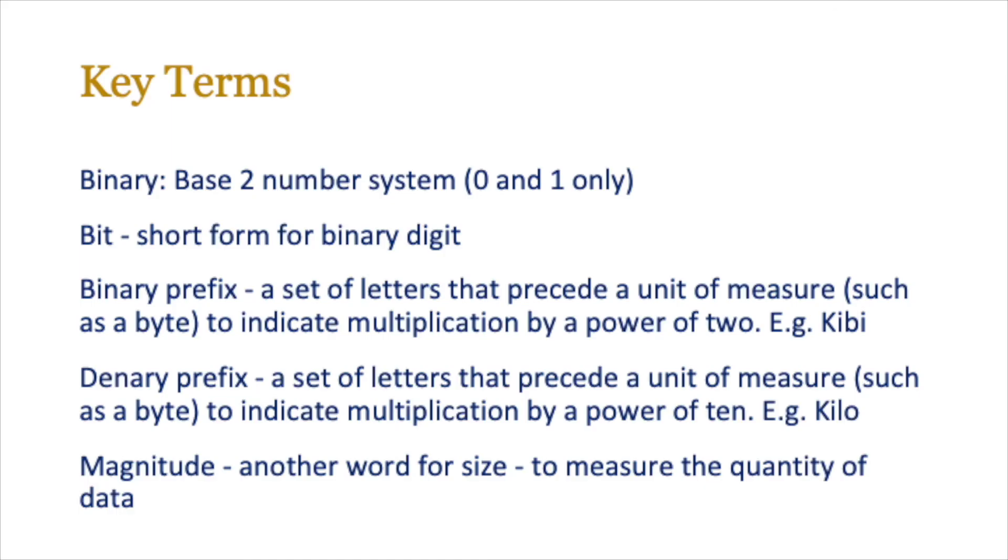Some of the key terms that we've used so far are binary, which is a base 2 number system, zero and one only. Bits, which are short form for binary digits. And the terms binary prefixes and denary prefixes, which are a set of letters that precede a unit of measure such as a byte. The binary one indicates multiplication by a power of 2, and denary indicates multiplication by a power of 10. And another word that is quite common is the magnitude of a number, and that's the actual value of the number.